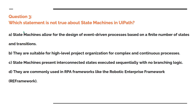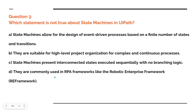Now let's move to question number three: which statement is not true about state machines in UiPath? Option A: state machines allow for the design of event-driven processes based on a finite number of states and transitions — remember to identify the keyword 'finite.' Option B: they are suitable for high-level project organization for complex and continuous processes. Option C: state machines present interconnected states executed sequentially with no branching logic. Option D: they are commonly used in RPA frameworks like the Robotic Enterprise Framework (RE Framework). Please comment your answer.